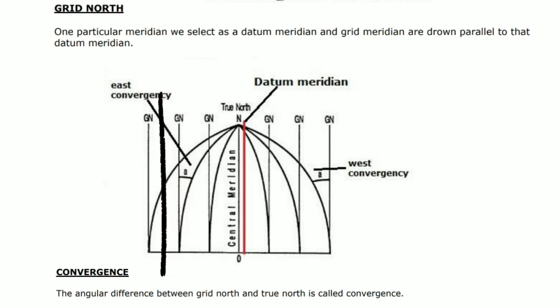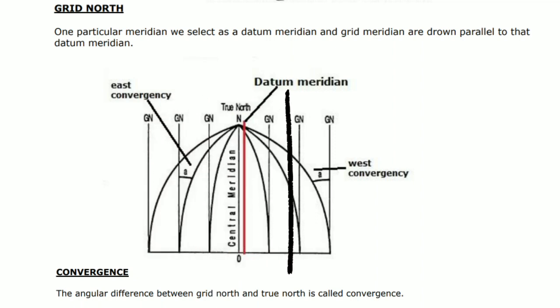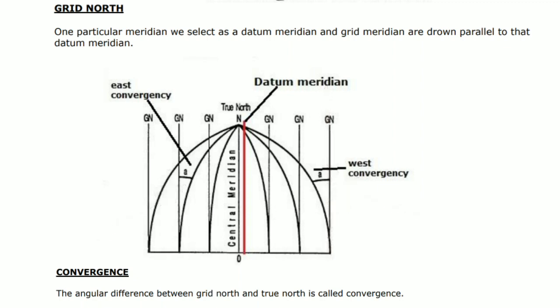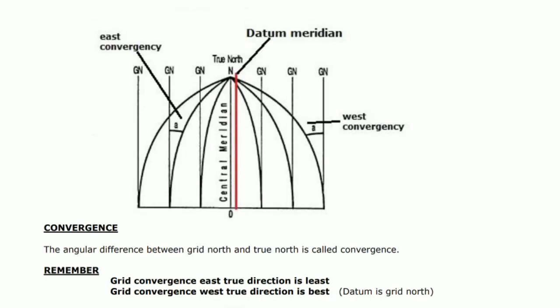Now we compare the datum meridian to another meridian which is not parallel to the datum meridian. They make some angle between them — that is called convergence. Convergence: the angular difference between grid north and true north is called convergence.